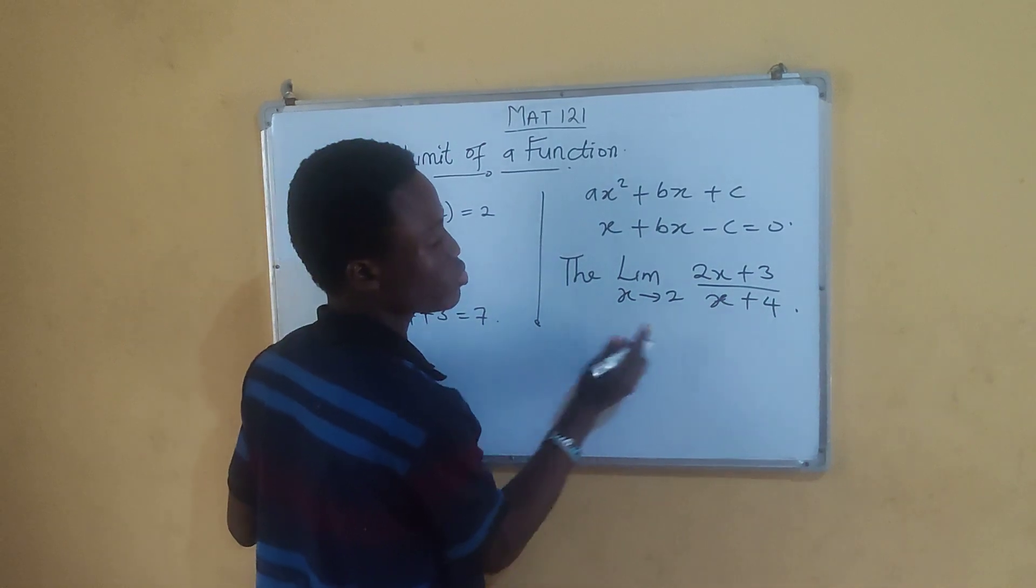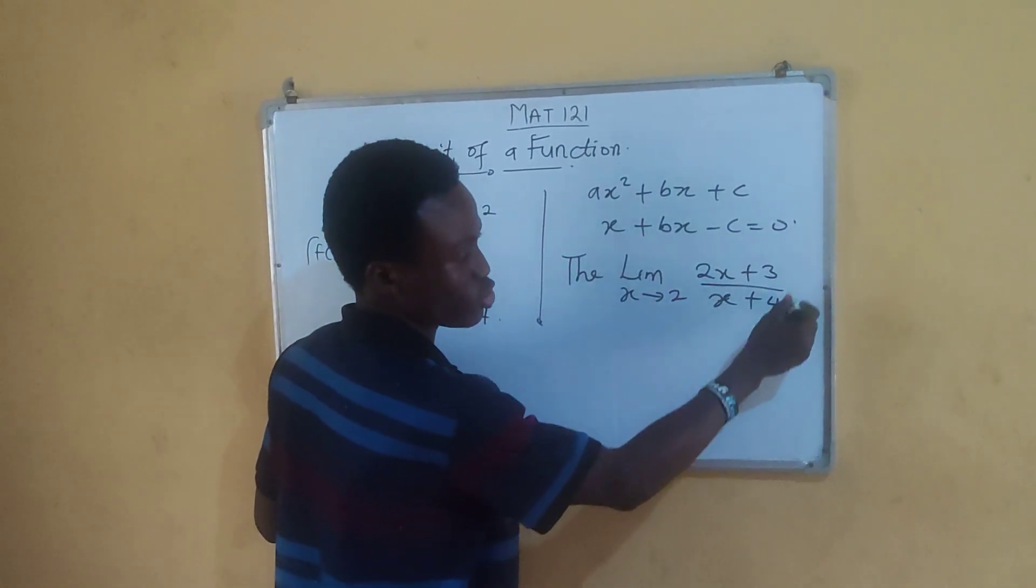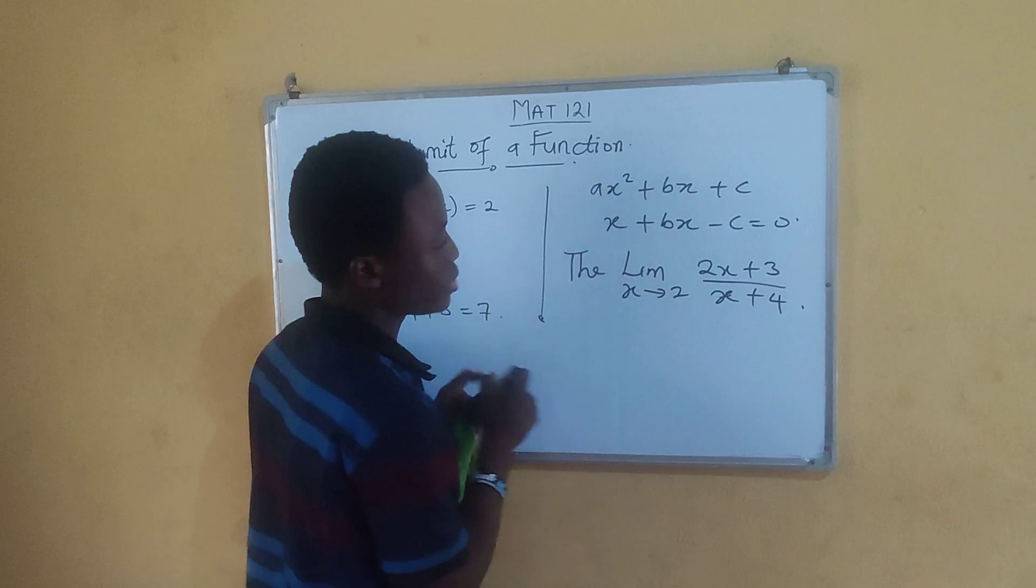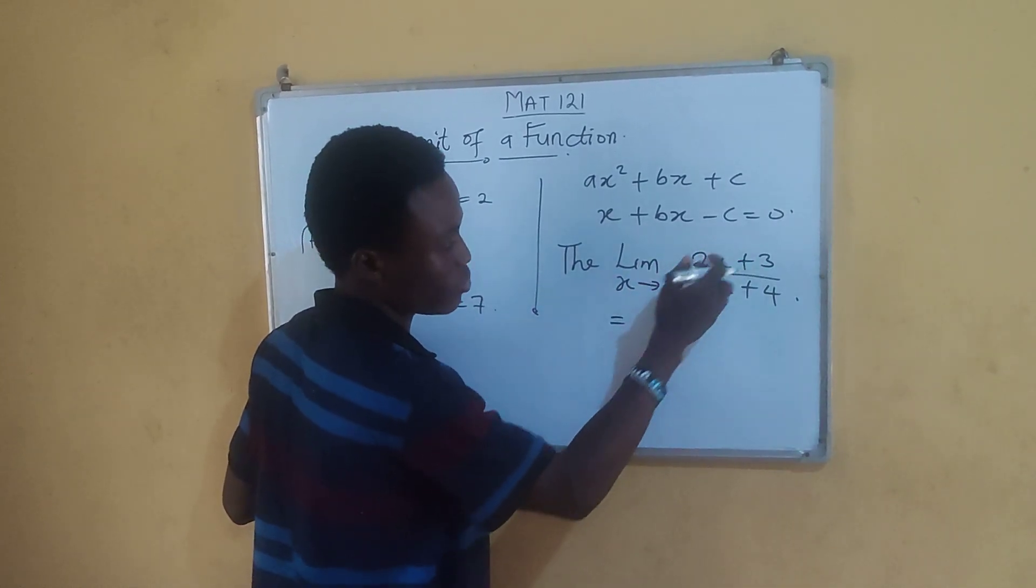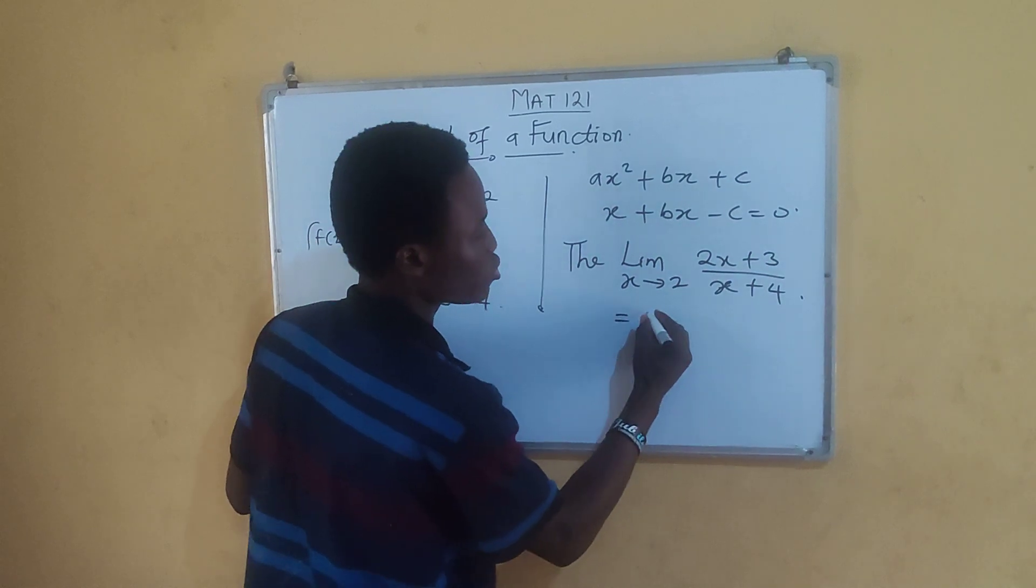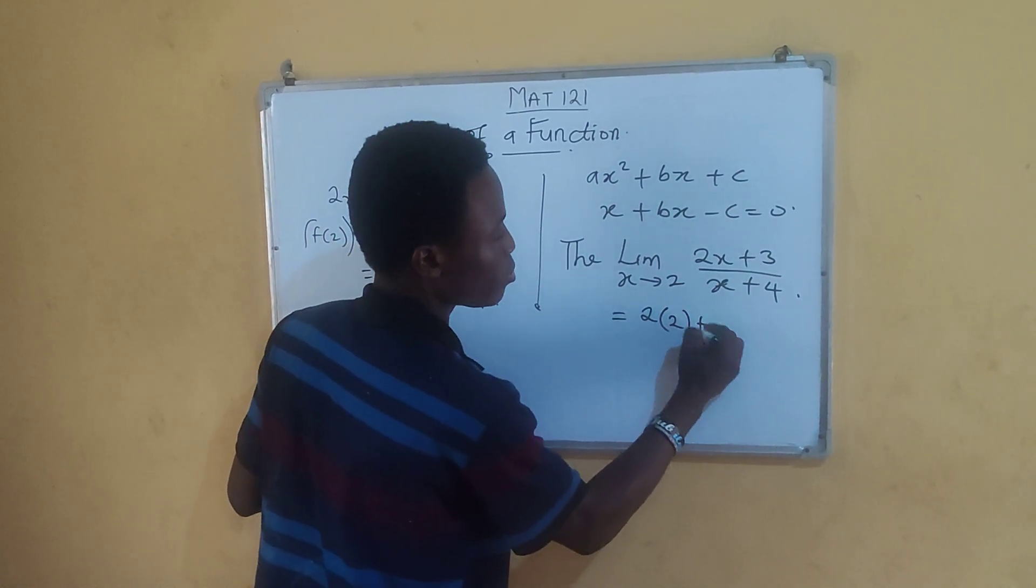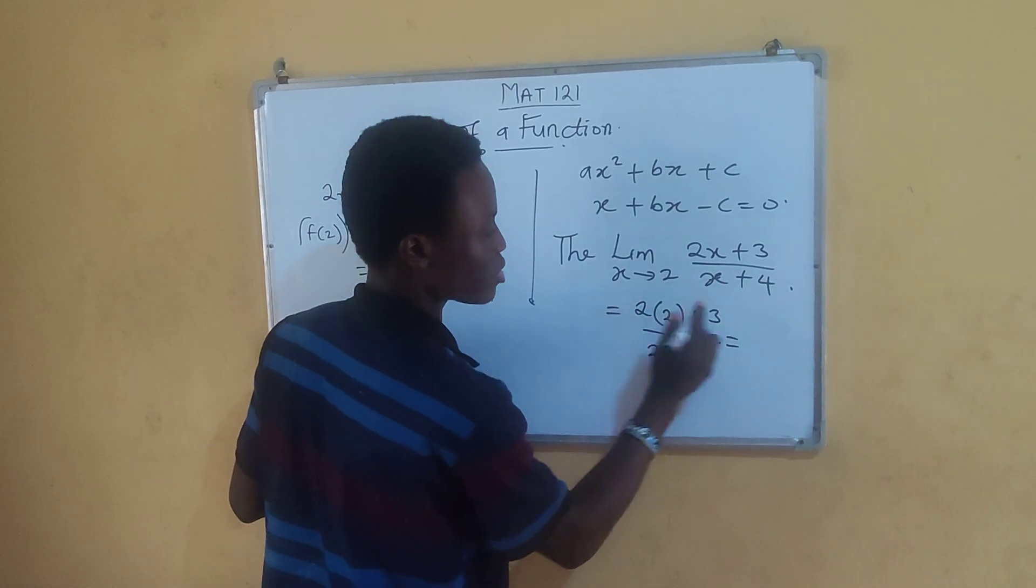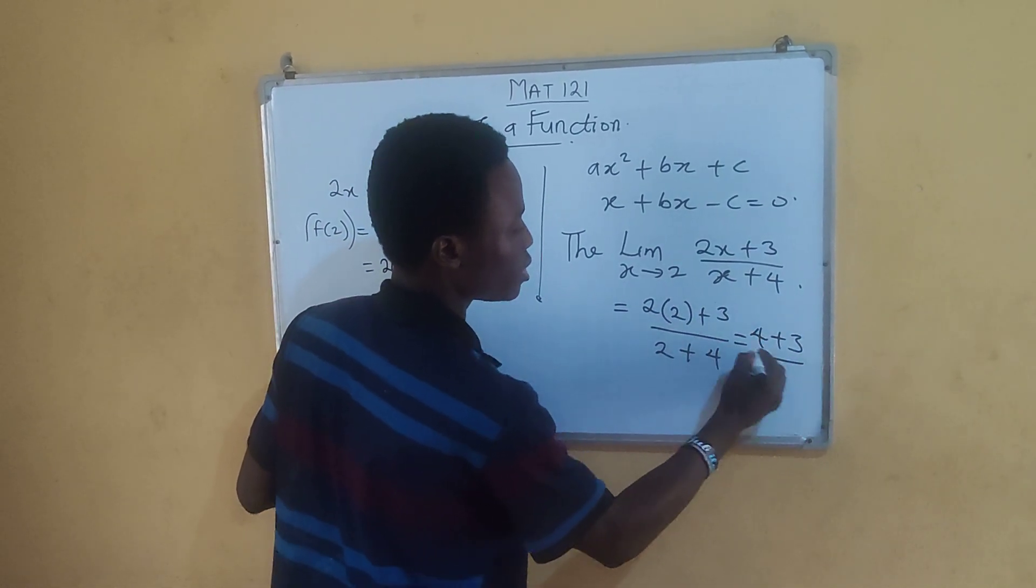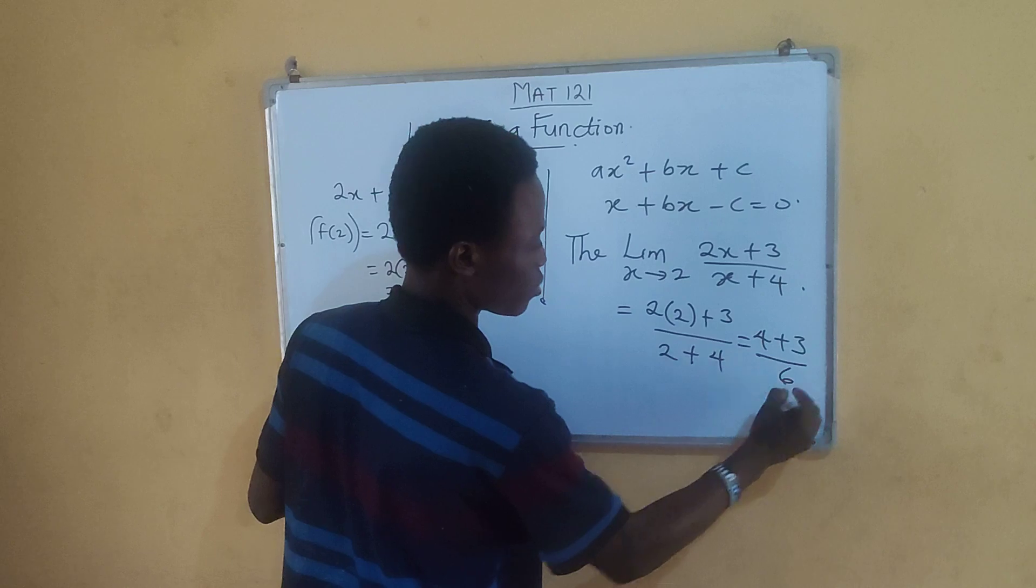All you need to do here is that the limiting value of x in this function is equal to 2. That means you just have to substitute the value of x, which is 2, into this function. So you have 2 into 2 plus 3 divided by 2 plus 4, which is equal to 4 plus 3 divided by 6.